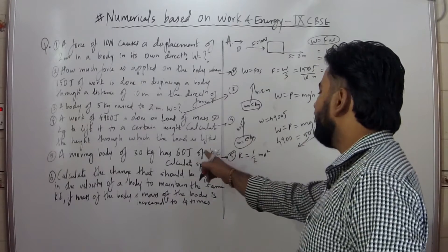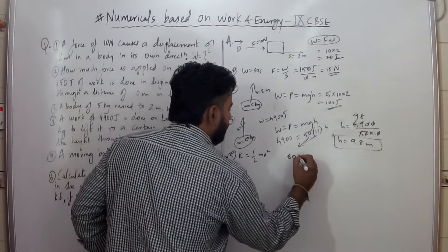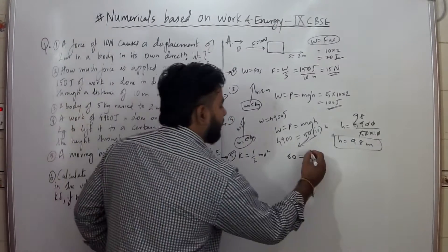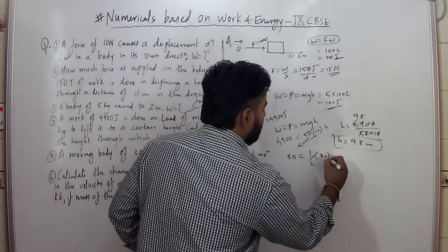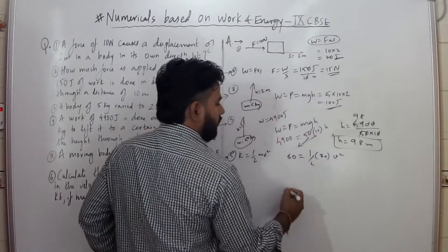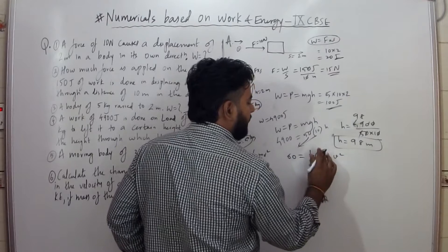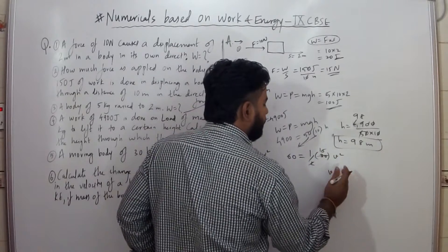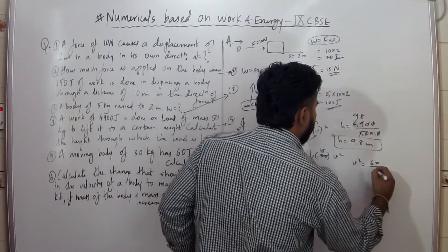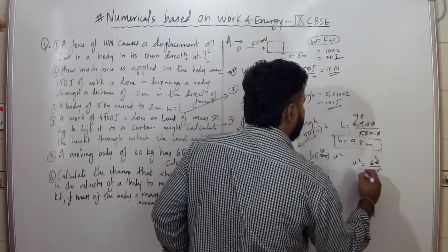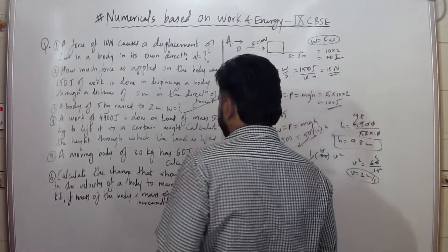According to the values given: kinetic energy is 60 joules, and using the formula, half into m (mass 30kg) into v squared. So this gives 15 v squared equal to 60. V squared is equal to 60 by 15, which is 4, so v is equal to 2 meters per second.